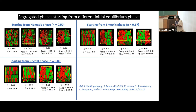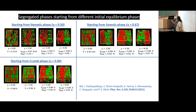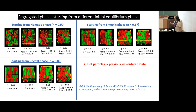We also applied activity starting from different phase points — nematic and smectic. Starting from a nematic structure, cold particles transition to smectic and eventually crystal, while hot particles form isotropic. Starting from a smectic mixture, cold particles form crystal while hot particles form nematic and eventually isotropic. This reveals a simultaneous phase transition: hot particles go to the previous lower-order state (nematic to isotropic), while cold particles go to the next higher-order state (nematic to smectic, then crystal).